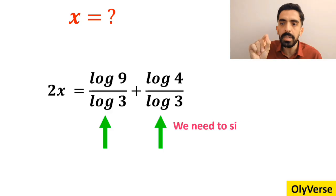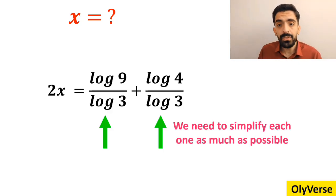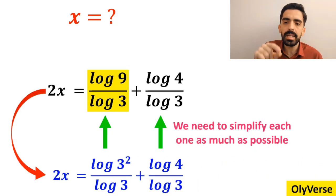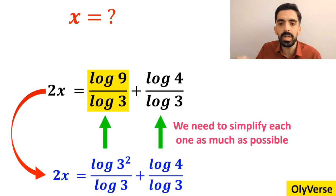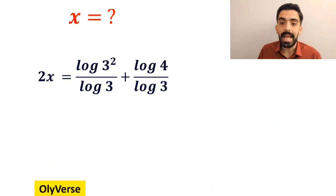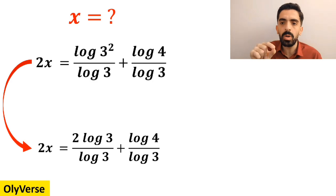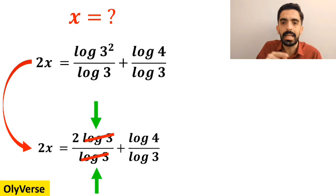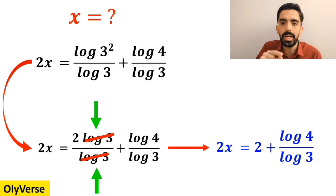This expression simplifies to 2x equals 2 times log of 3 over log of 3 plus log of 4 over log of 3. The log of 3 terms cancel each other out, and this simplifies to 2x equals 2 plus log of 4 over log of 3.